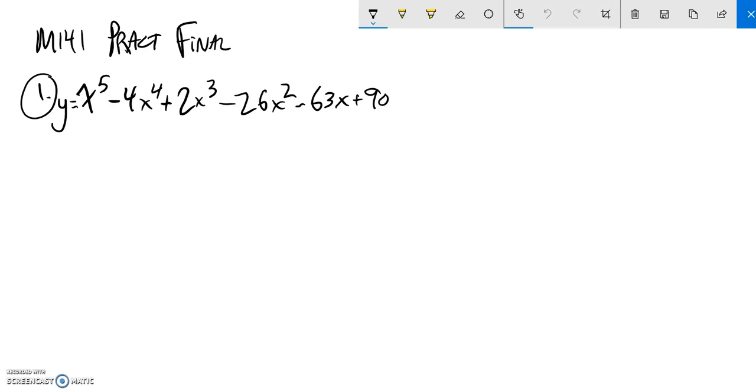This is Math 141, practice final problem number one. We're supposed to find all the zeros for this polynomial. One thing I know is that my rational zeros are going to be factors of 90 over factors of 1. So there's a lot of possibilities.